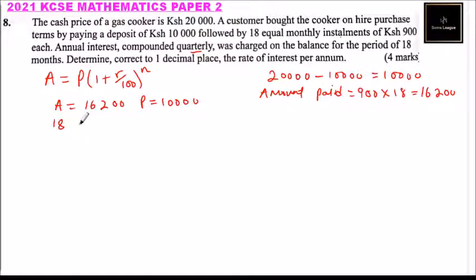It was compounded quarterly. For 18 months, quarterly means three months, so there are six quarters. We take n equals 6.